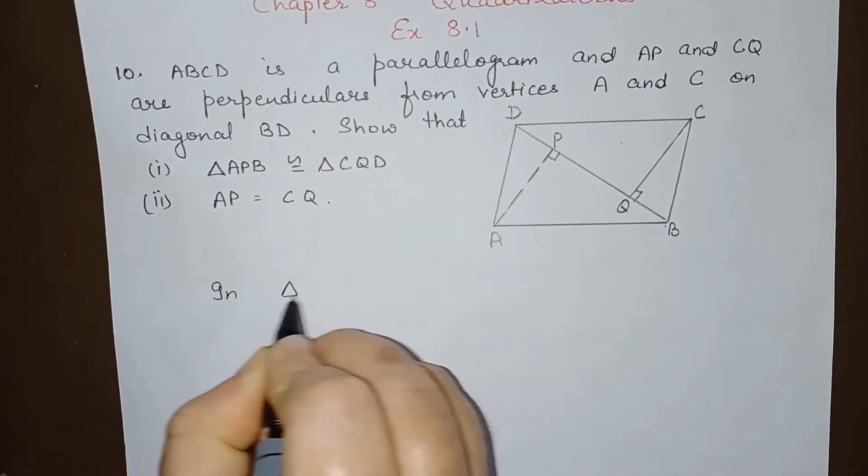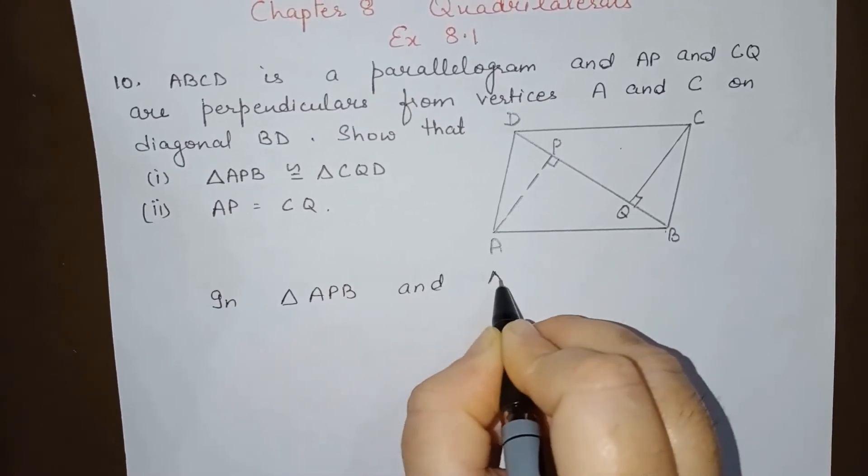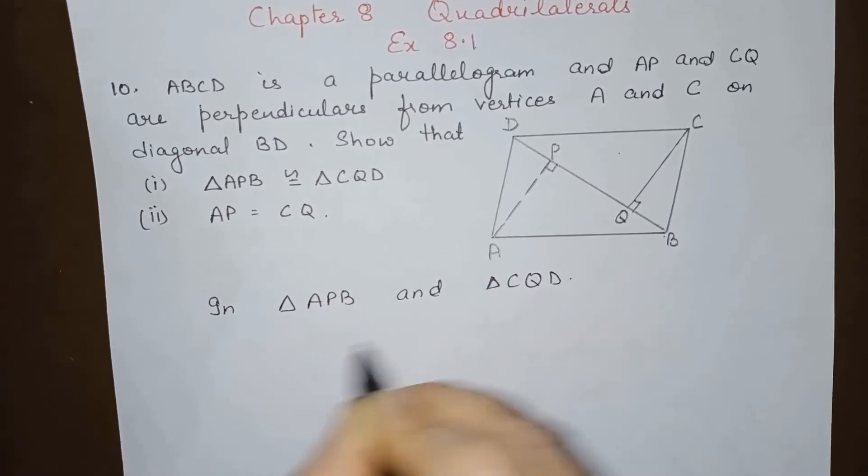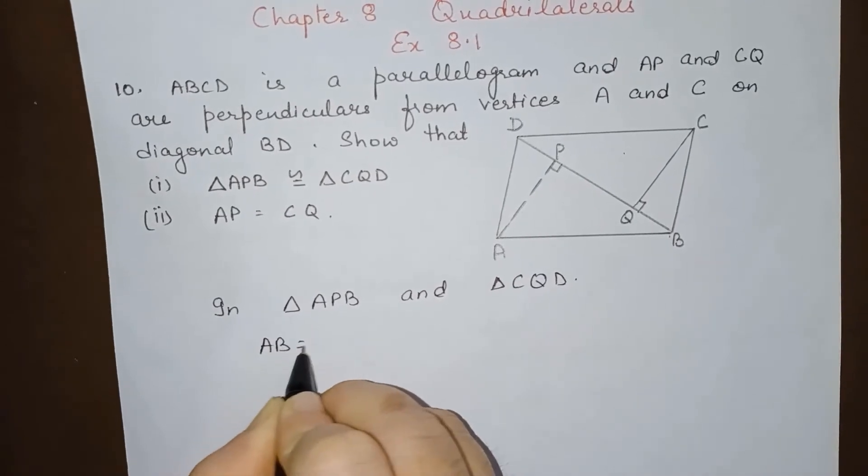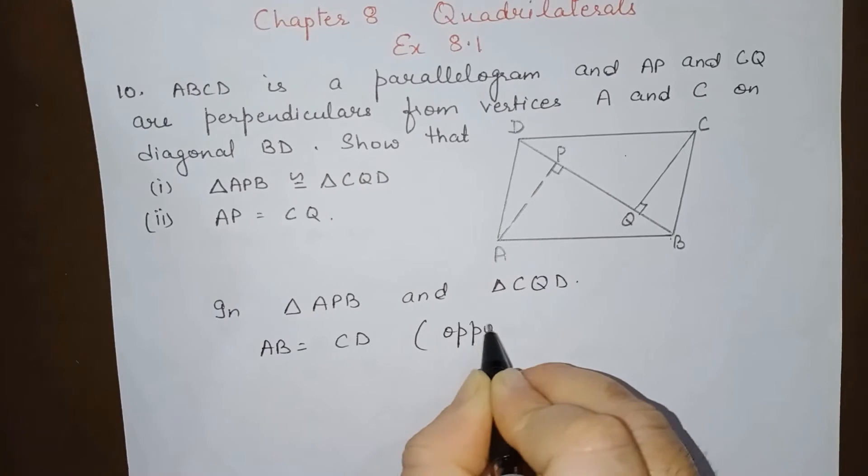In triangle APB and triangle CQD, we have AB is equal to CD. Opposite sides of a parallelogram are equal.